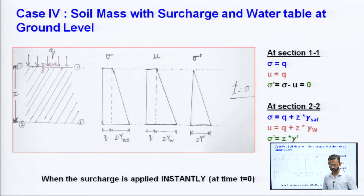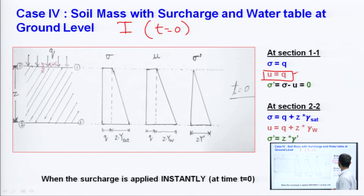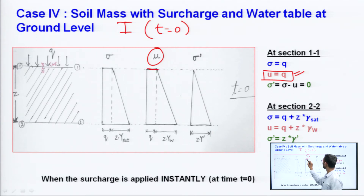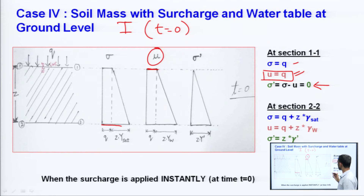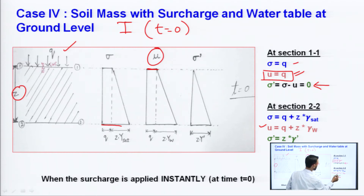For the instant case at t = 0, the entire surcharge is taken by pore water pressure at that very instant. At section 1-1, pore water pressure equals Q, and effective stress σ' = 0. At section 2-2, total stress equals Q + z × γ_saturated, pore water pressure equals Q + z × γ_w, giving effective stress = z × γ'.